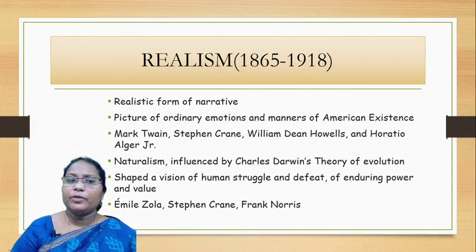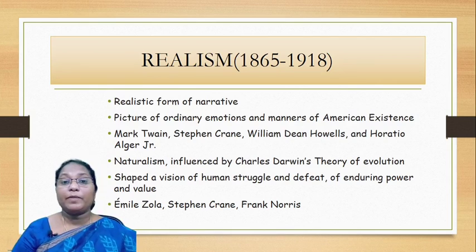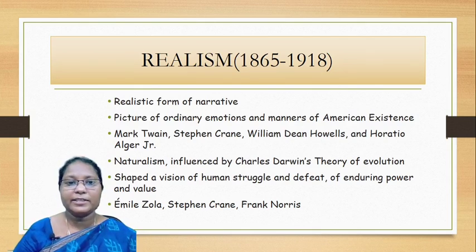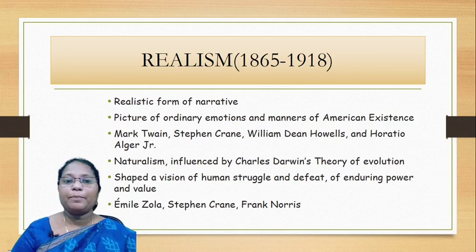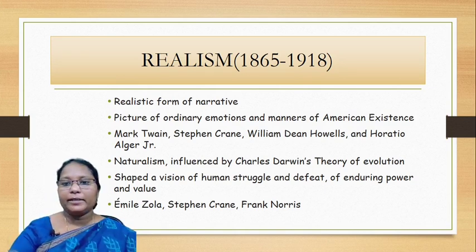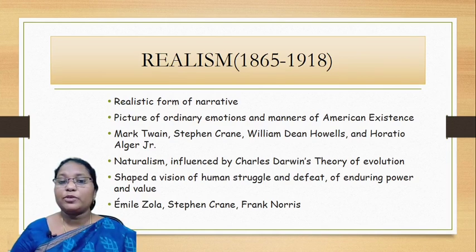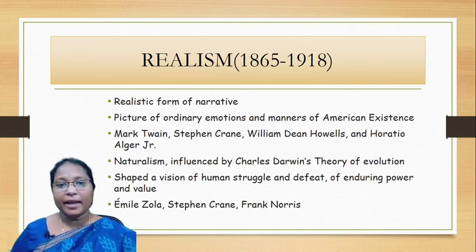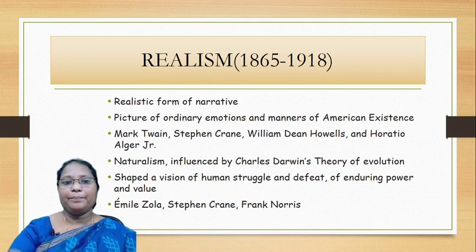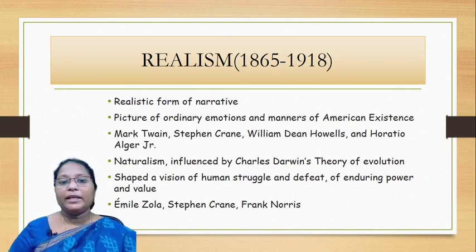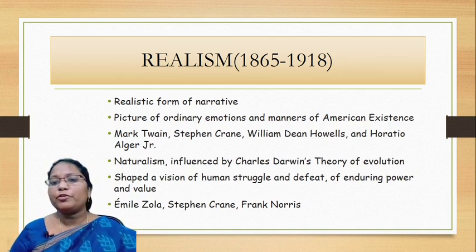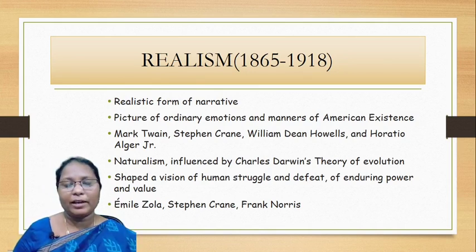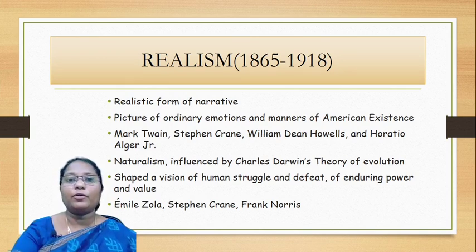Realism: during this period, realistic forms of narrative presentation appear in the writings. Pictures of ordinary emotions and manners of American existence were given prominence. For example, Mark Twain's works and Stephen Crane's writings reflect the realistic portrayal of themes and characters. Soon after, realism gave rise to naturalism, influenced by Charles Darwin's theory of evolution. Naturalism shaped a vision of human struggle and defeat of enduring power and value. The best examples for naturalism are Émile Zola, Stephen Crane, and Frank Norris. This period spans from 1865 to 1918.